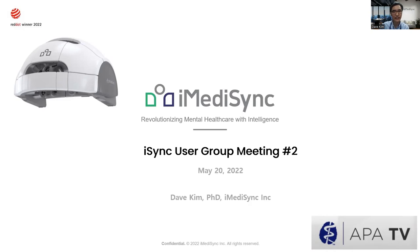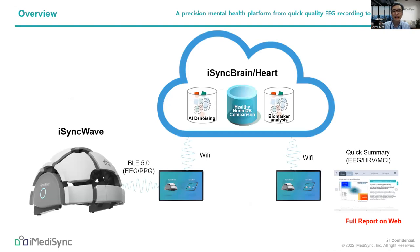Before jumping into today's topic, I'd like to briefly remind you of two central ideas from the first user group meeting. The first is a schematic of the iSYNC precision mental health platform — from quick, easy recording to AI analysis. The iSYNC WAVE device sends 19-channel EEG and PPG to a tablet through Bluetooth connection, and data are uploaded to the cloud through Wi-Fi after recording. In the cloud, data goes through an automated AI denoising pipeline, sensor and source level features are extracted and compared to an age- and sex-classified normative database. The data also goes through biomarker analysis. A quick EEG and HRV biomarker summary report can be reviewed on the iSYNC WAVE application within 10 minutes after recording, while a detailed full report can also be reviewed on the website.